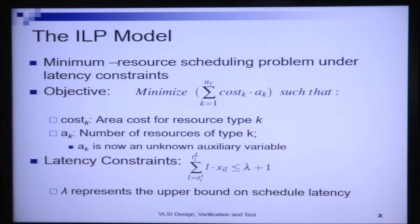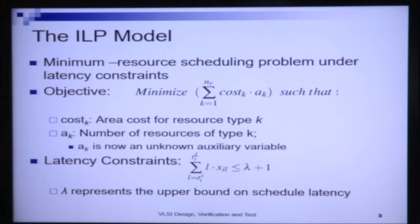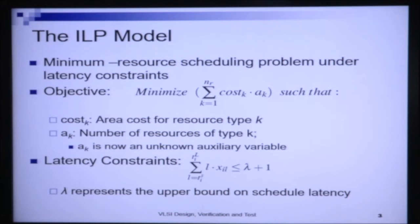As we did for the resource-constraint scheduling problem, we will look at the ILP model. The ILP model for the latency-constraint scheduling problem is very similar to that of the resource-constraint scheduling problem. The main difference is the objective. Here we want, given a bound on the time within which to schedule, to minimize the resource — that is, the area consumed by the circuit.